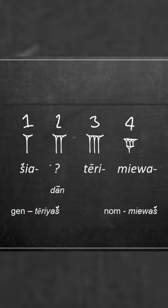For number two we just don't know how it was represented. However, 'second' was represented as 'darn'. 'Shia' is debated, but that's probably the most likely reconstruction for one. Three and four are a bit more reliable — we have 'tere' and 'miaua'.